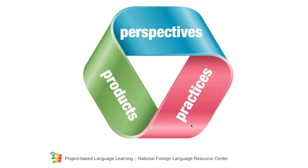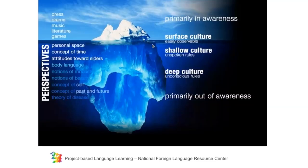Big C and little C culture has a lot to do with products and practices. The practices may be very subtle — they may include things such as proxemics: how close can you stand to another person without being rude? You need to be careful about showing the soles of your feet to another person. Those are very subtle, culturally motivated practices, but they are things that we can observe. What is hard to observe is perspectives. Perspectives are what motivate the products and the practices — it's the cultural attitudes that underlie. Most of the time, these are quite invisible to us, particularly our own perspective, because we are using that perspective to look through and see other cultures.